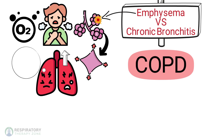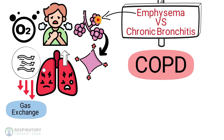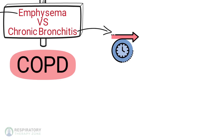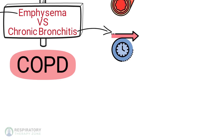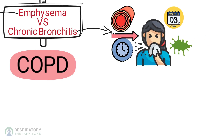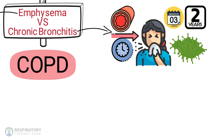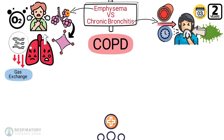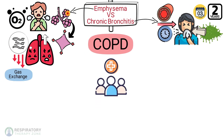This causes air to become trapped in the lungs, reducing the surface area available for gas exchange. Chronic bronchitis involves long-term inflammation of the bronchial tubes. This condition is characterized by a persistent cough that produces mucus for at least three months in a year for two consecutive years. The inflamed bronchial tubes produce a lot of mucus, leading to coughing and difficulty breathing.